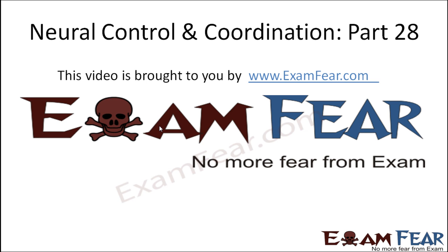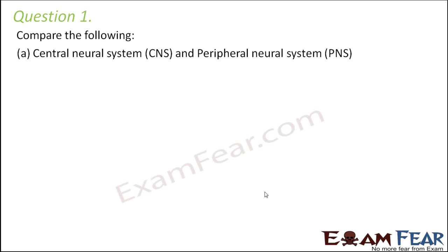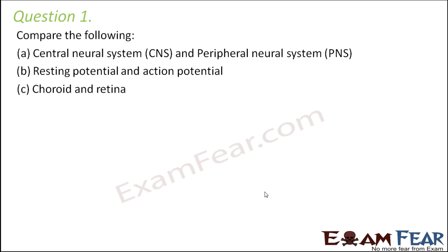Hello friends, this video on Neural Control and Coordination part 28 is brought to you by examfear.com — no more fear from exam. Now that we have reached towards the end of this lesson, it is time to look at some questions so that you can understand whether you got this lesson well or not. Let us look at question number 1: compare the central nervous system and the peripheral neural system, resting potential and action potential, choroid and retina. You basically need to compare or distinguish them.